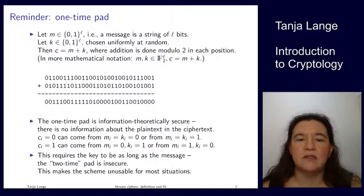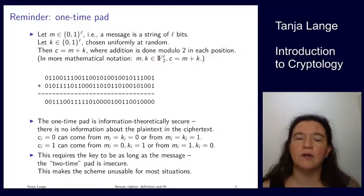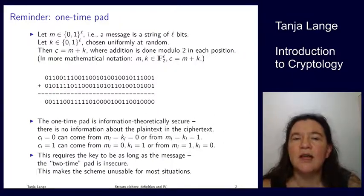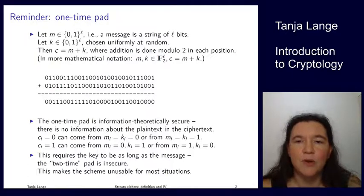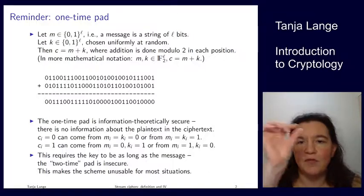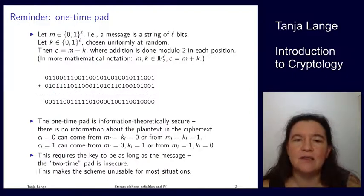The only problem is that the key has to be as long as the message. If Alice and Bob want to communicate this way, they have to exchange a very long string of bits in advance, which is operationally very cumbersome. And if they ever use the same pad twice — maybe Alice forgot to rip off a portion — they're using what is called the two-time pad, which is insecure. So this is not a practical scheme.